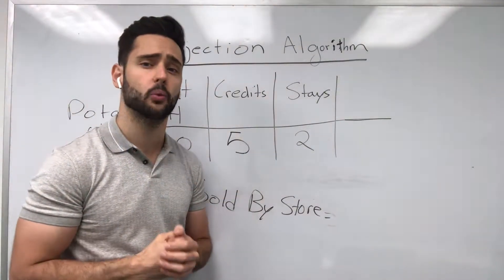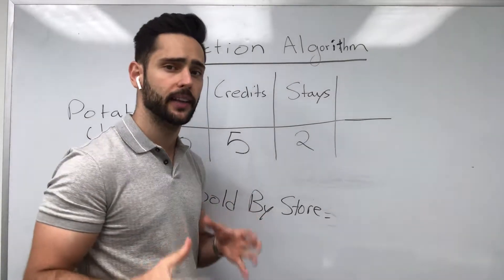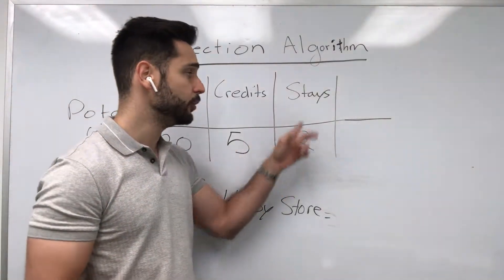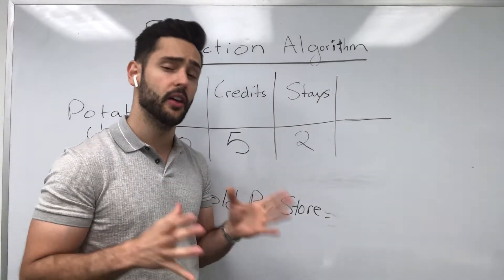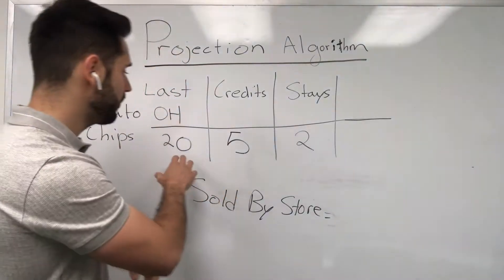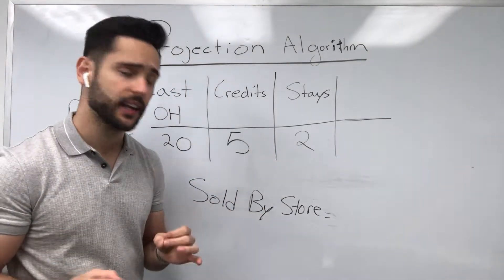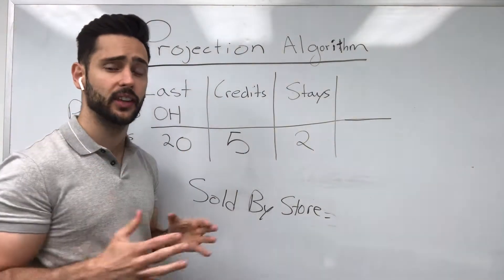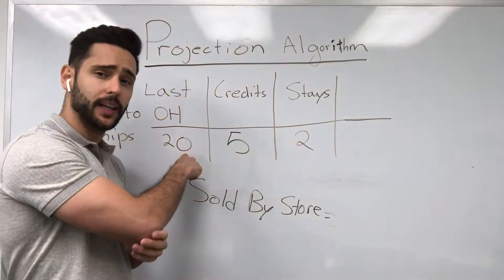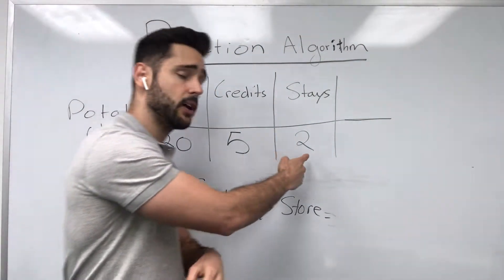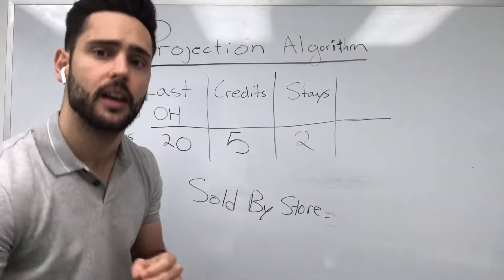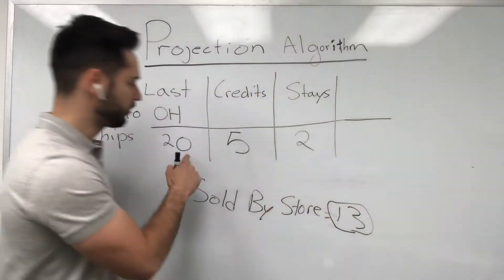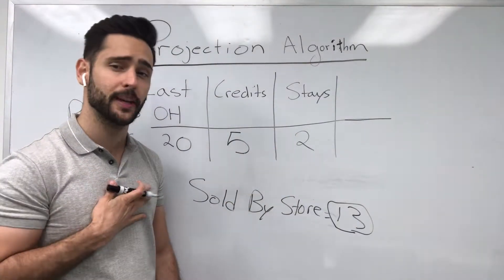After we take out those five credits, we're going to count how many good potato chips are left on the display that are going to remain there until the next visit. In this example, we're going to leave two stays — two potato chips are staying on the display for the next visit. With these values, we can calculate a value called sold by store. If we left 20 last time, took out five credits, and counted two stays remaining on the display, that means the store sold 13. That's 20 minus 5 minus 2.